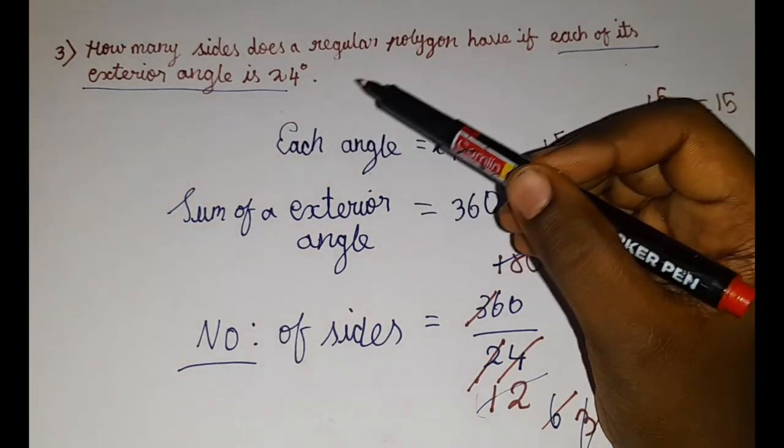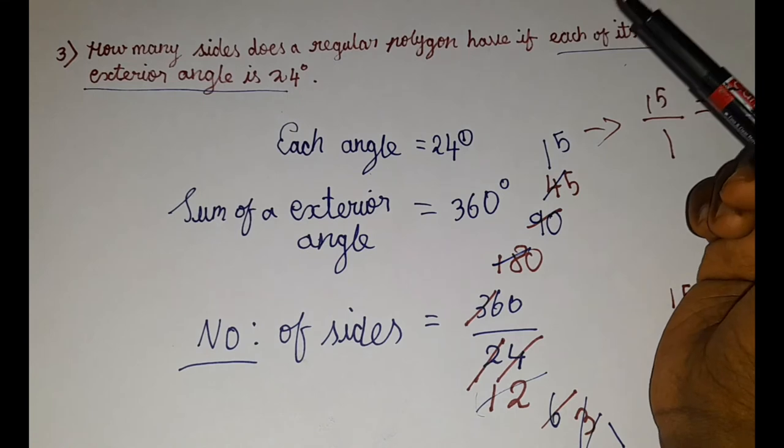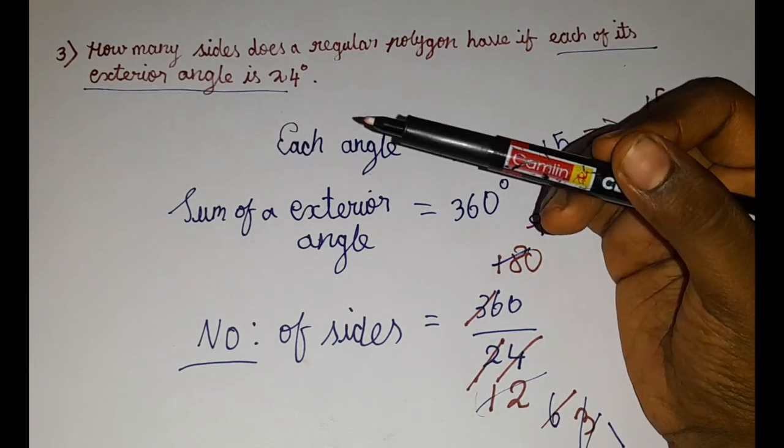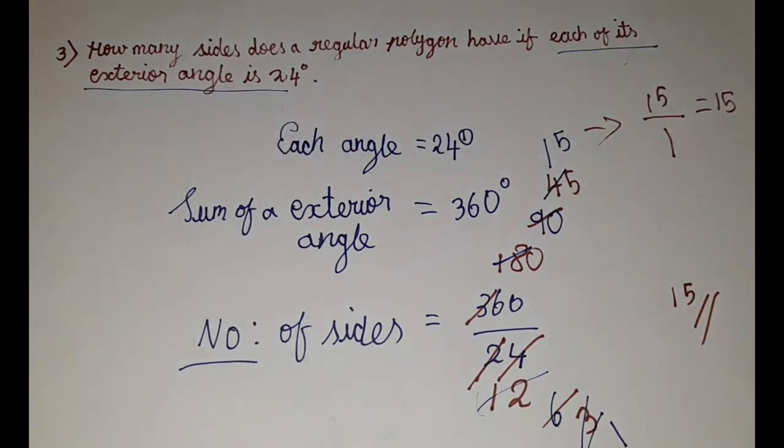So how many sides does a regular polygon have if each of its exterior angle is 24? A regular polygon has 15 sides if its exterior angle is 24 degrees. So this is the answer for this question.